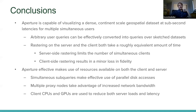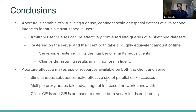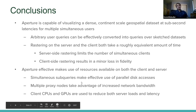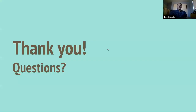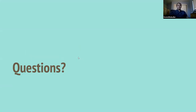In conclusion, Aperture is capable of visualizing a dense, continent-scale geospatial dataset at sub-second latencies for multiple simultaneous users. We can convert arbitrary user queries into queries over sketch datasets. Both server-side and client-side rastering take roughly equivalent total time, but server-side rastering limits the number of simultaneous clients while client-side rastering results in minor fidelity loss at data set edges. Aperture makes effective use of parallel disk accesses via sub-queries, multiple proxy nodes for bandwidth, and client CPUs and GPUs to reduce server load — though client-side rastering assumes the client has reasonable hardware.